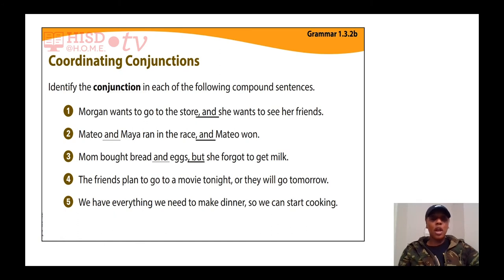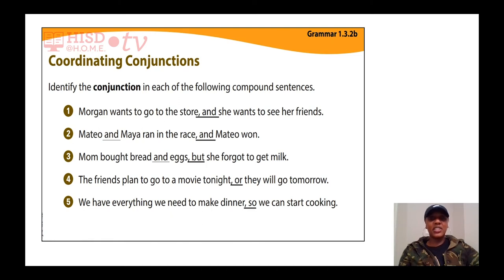Number four: 'The friends plan to go to a movie tonight, or they will go tomorrow.' The conjunction is 'or' — that combines 'the friends plan to go to a movie tonight' with 'they will go tomorrow,' making it a compound sentence. Number five: 'We have everything we need to make dinner, so we can start cooking.' The conjunction is comma so, combining those two simple sentences together.